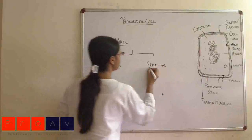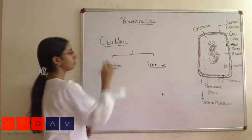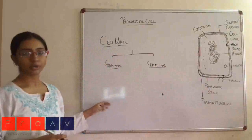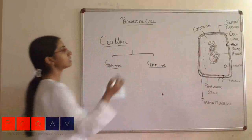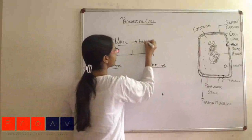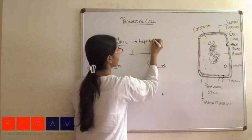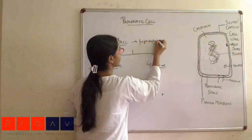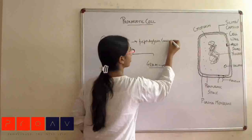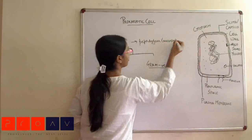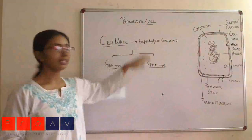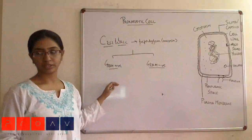What is the difference between these two? Apart from the differences, there are certain common moieties that are present. The cell wall basically consists of peptidoglycan units, which provide the shape. This peptidoglycan actually differs in these two kinds of bacteria.